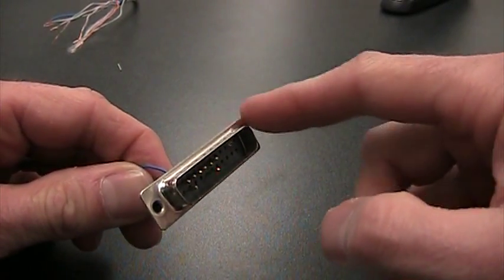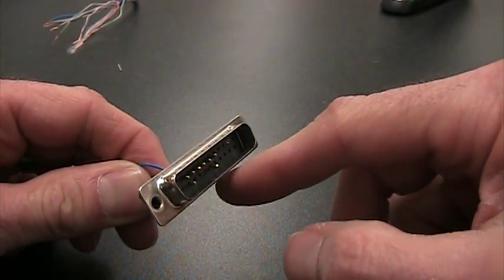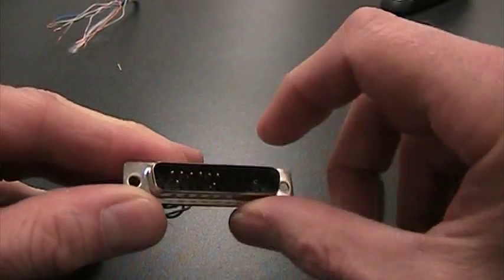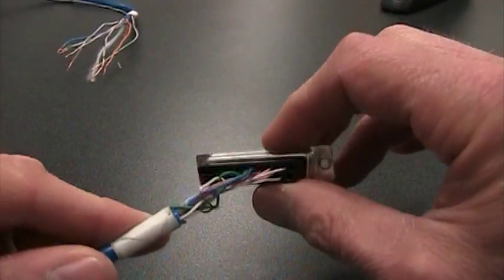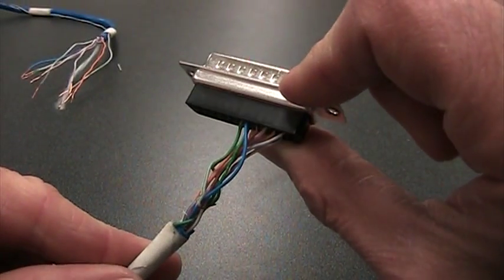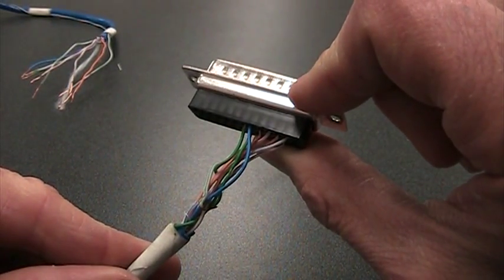This D-shaped connector is called the 25-pin D-sub connector. These are the pins, and we will be wiring the pins onto the wires that I'll show in a moment. And here are the wires coming into the back of the D-sub connector.